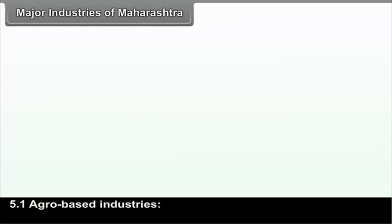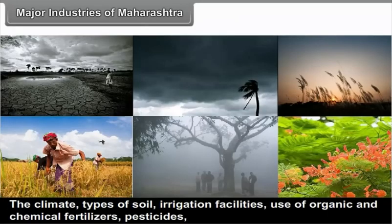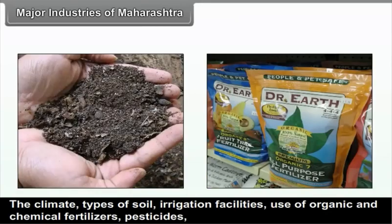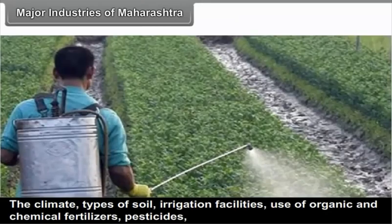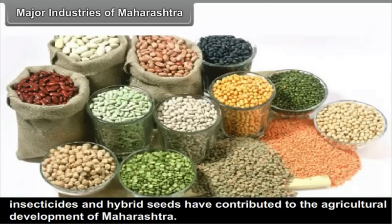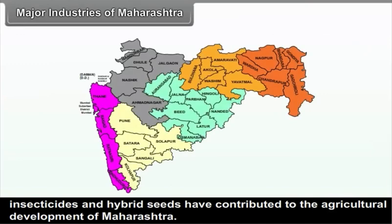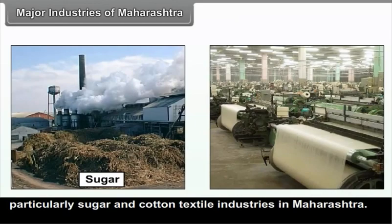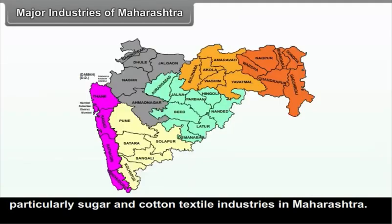Major Industries of Maharashtra — Agro-based Industries. The climate, types of soil, irrigation facilities, use of organic and chemical fertilizers, pesticides, insecticides and hybrid seeds have contributed to the agricultural development of Maharashtra. These resulted in increased agricultural produce, which led to the growth of agro-based industries, particularly sugar and cotton textile industries in Maharashtra.